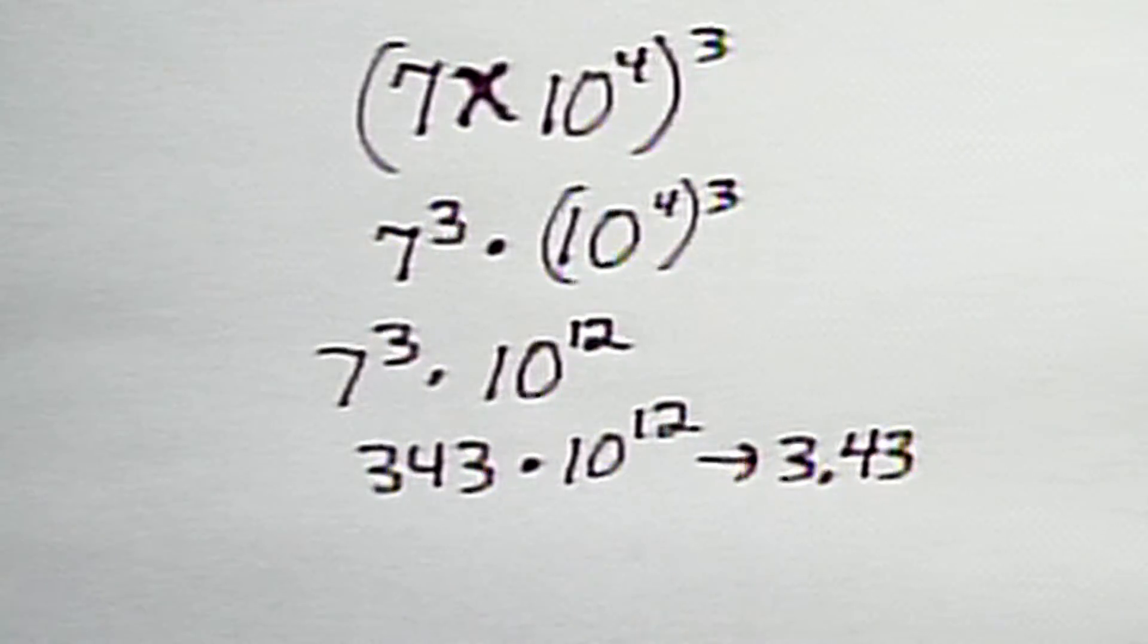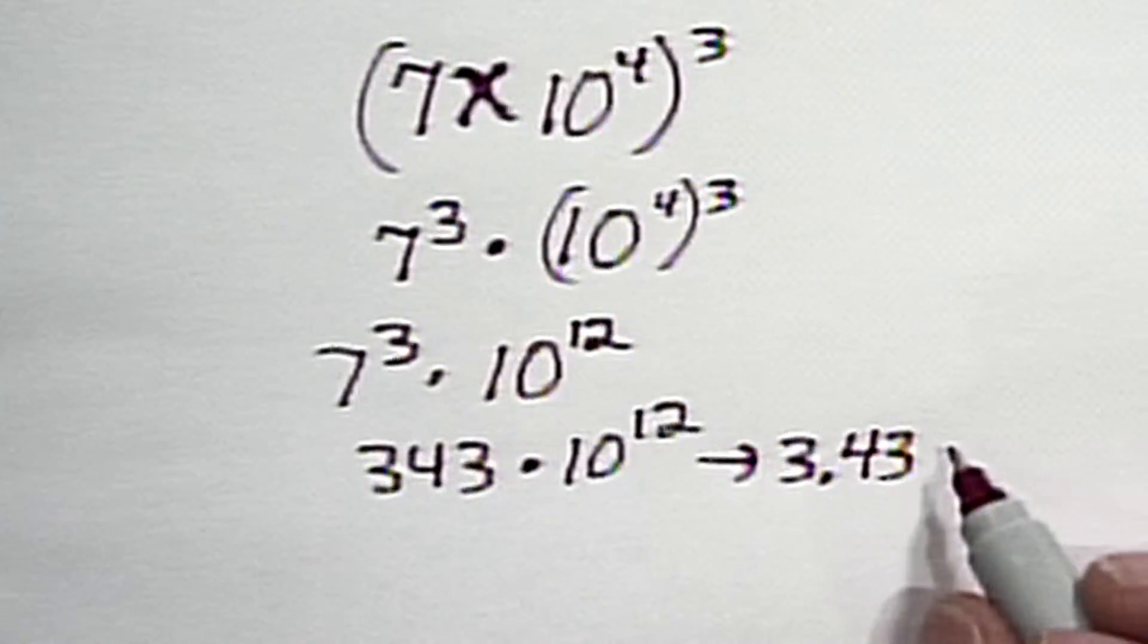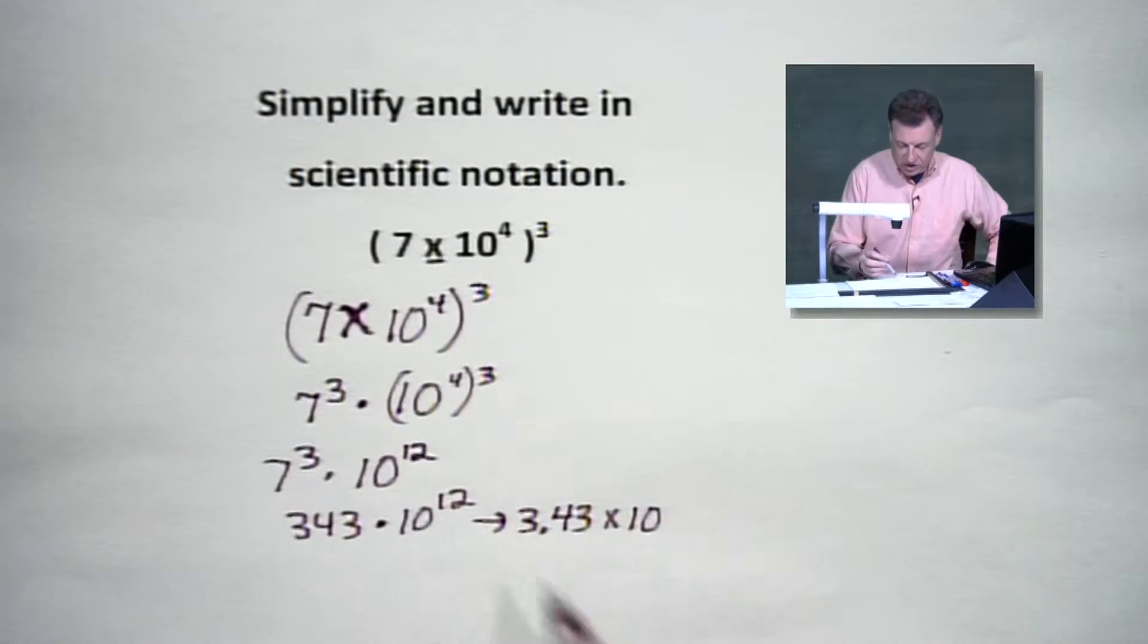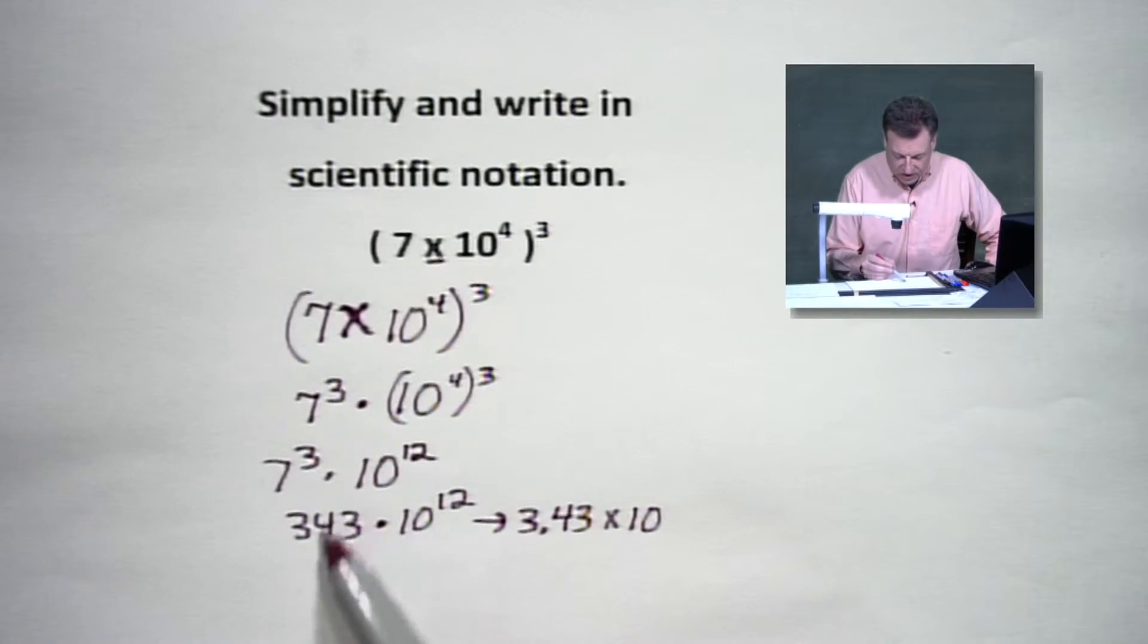And we're going to see, what does that give us? Well, it gives us times ten to, uh-oh, something happened. We just increased - we have decreased 343 to three and forty-three hundredths...